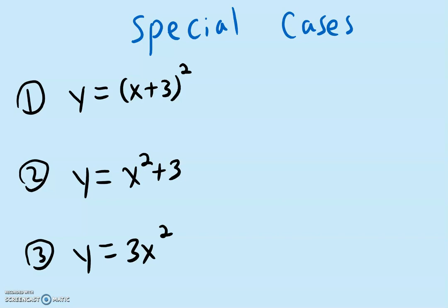In the first example, we do have an x coordinate because we have a number inside here with the x. This positive 3 will become a negative 3. But what we're missing is that we do not have a y coordinate outside. And so the y coordinate is going to be 0.